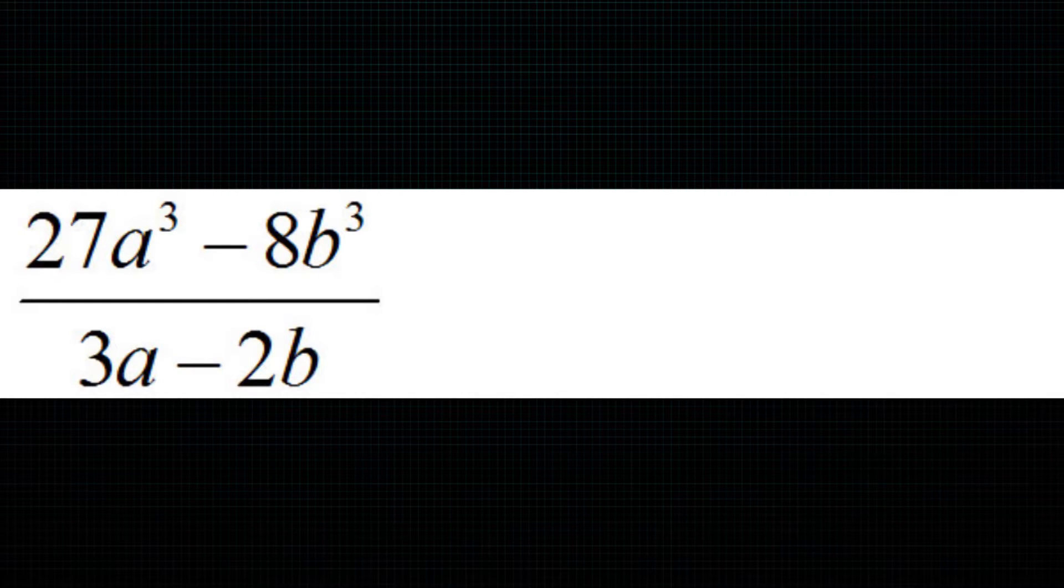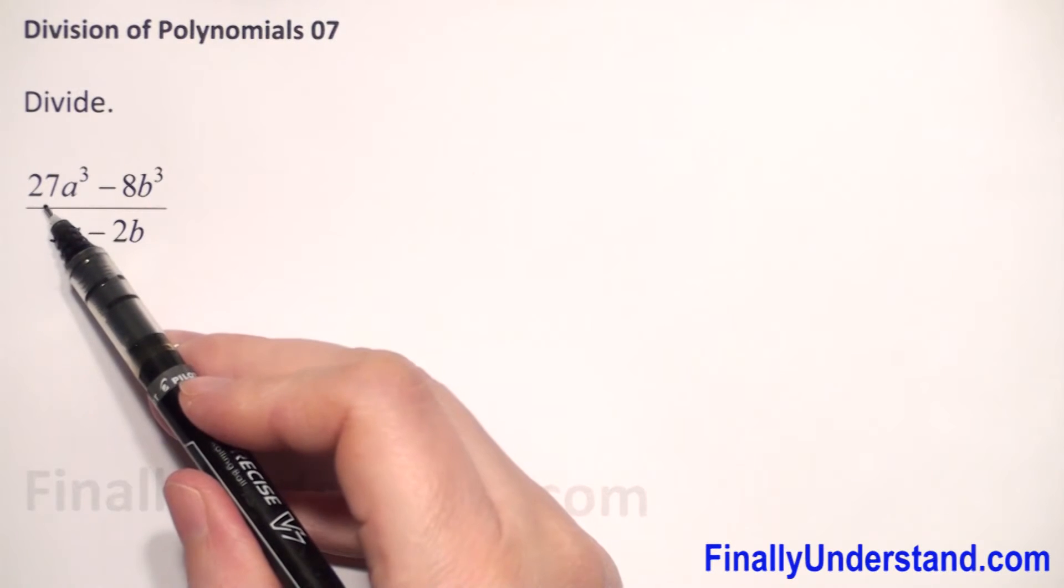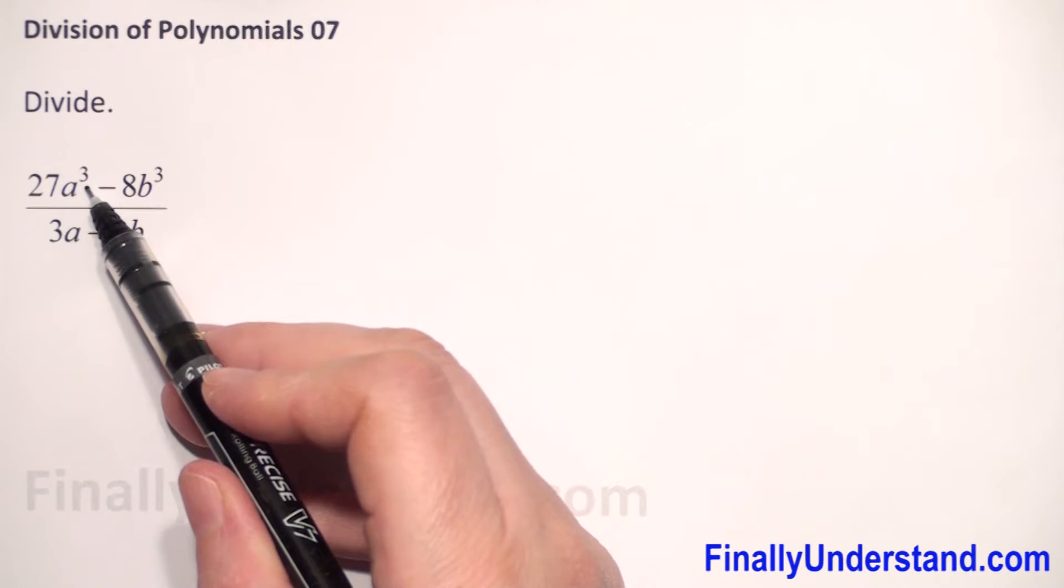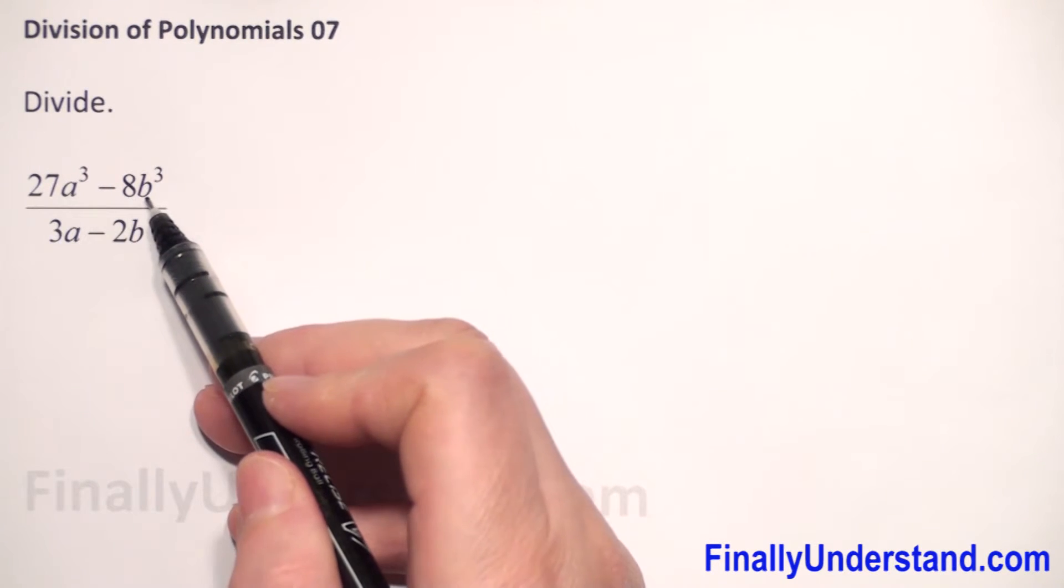We have division of two polynomials. What I will do first, we have 27a³ in the numerator and 8b³.